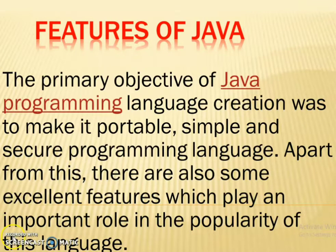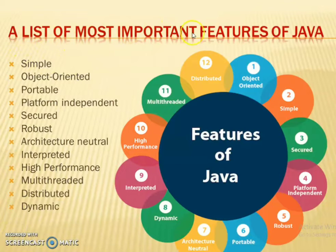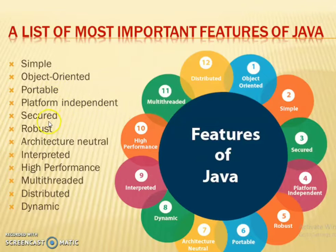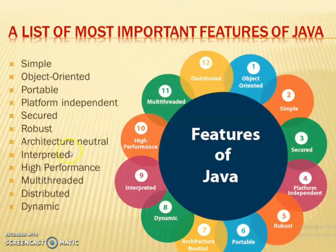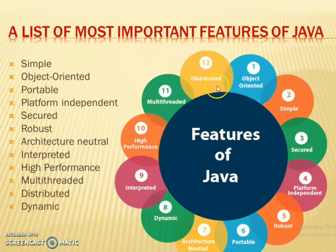Let's see our features one by one. A list of most important features of Java: Simple, Object Oriented, Portable, Platform Independent, Secured, Robust, Architecture Neutral, Interpreted, High Performance, Multi Threading, Distributed, Dynamic. This is our list of most important features of Java.